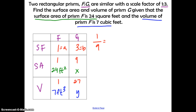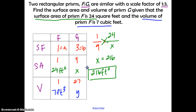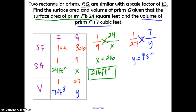To find the surface area of prism G, set up the proportion: 1 to 9 equals 24 over x. Cross-multiplying gives x equals 9 times 24, which is 216. So the surface area of prism G is 216 square feet. For volume, set up the proportion: 1 to 27 equals 7 over y. Cross-multiplying gives y equals 7 times 27, which is 189. So the volume of prism G is 189 cubic feet.